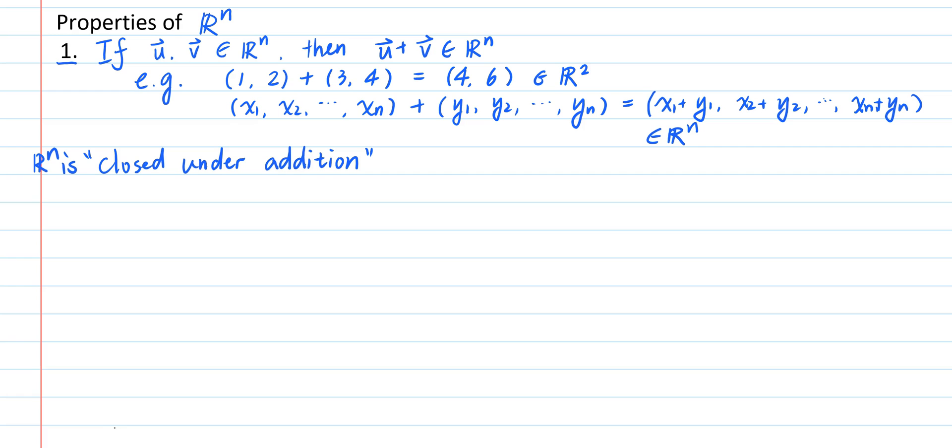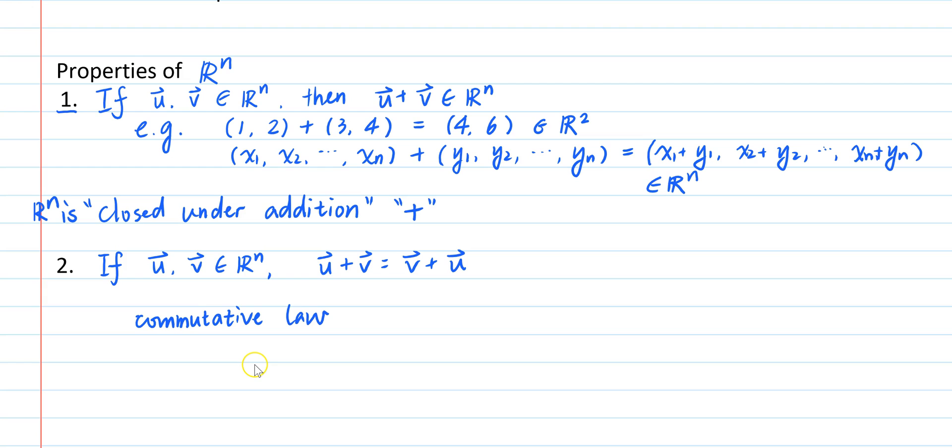Addition is defined as component-wise addition of vector components. The second property says if you have two elements u and v in R^n, then u plus v is equal to v plus u. In other words, the addition operation defined for elements in this set follows commutative law of addition.